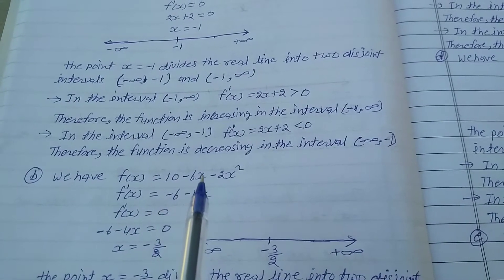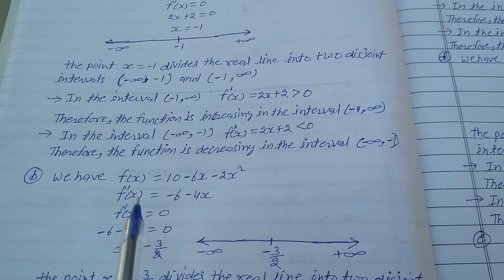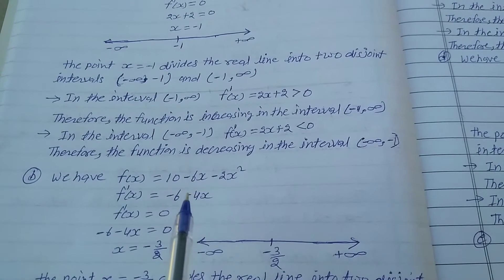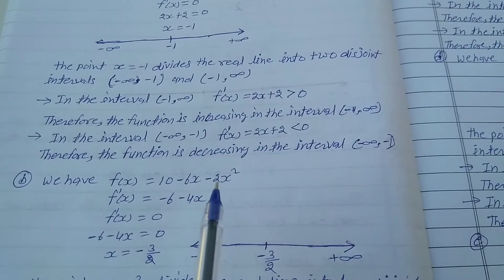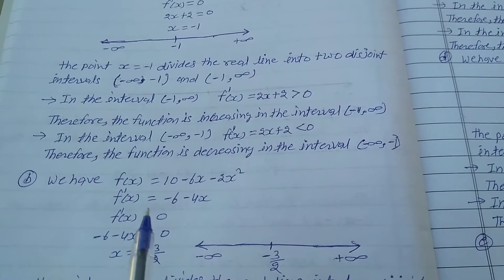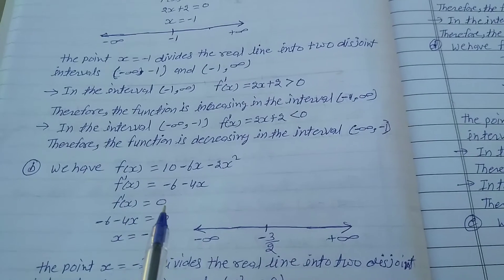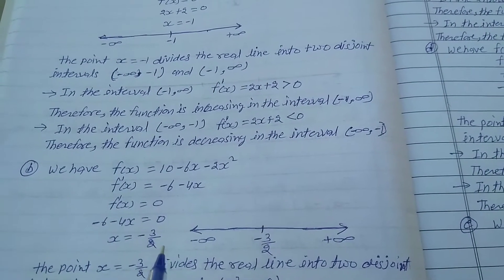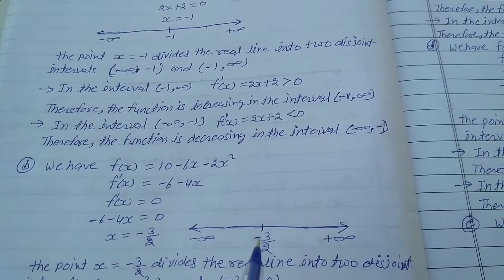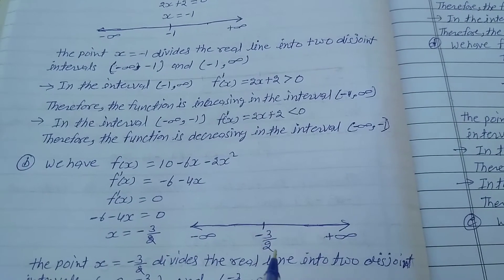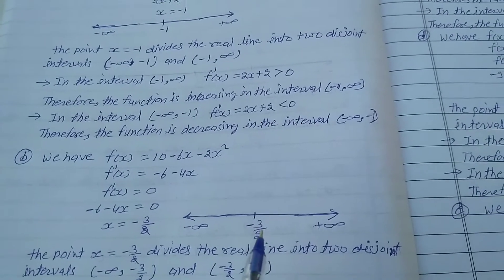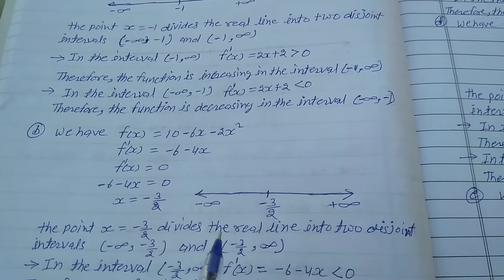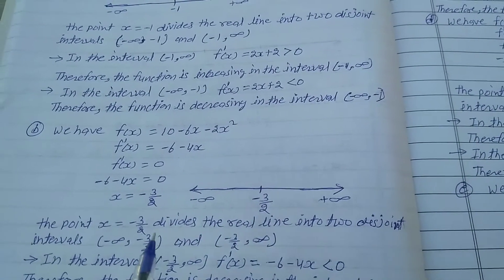(b) f(x) = 10 - 6x - 2x². Differentiate with respect to x: f'(x) = -6 - 4x. Setting f'(x) = 0 gives -6 - 4x = 0, so x = -3/2. The point x = -3/2 divides the real line into two disjoint intervals.